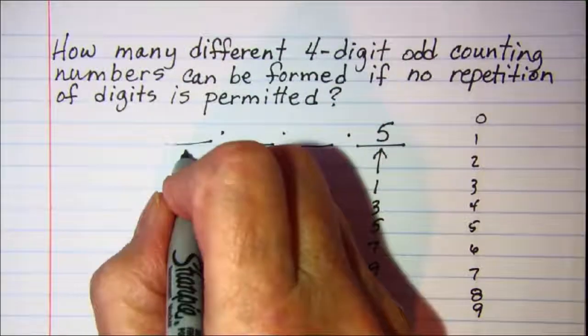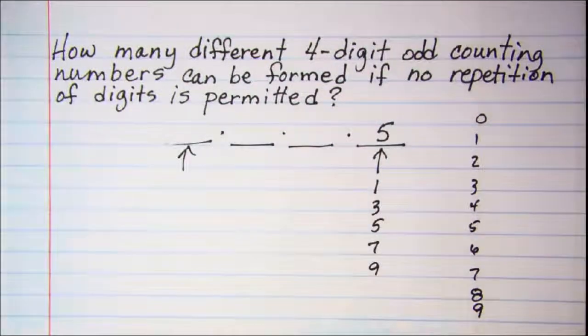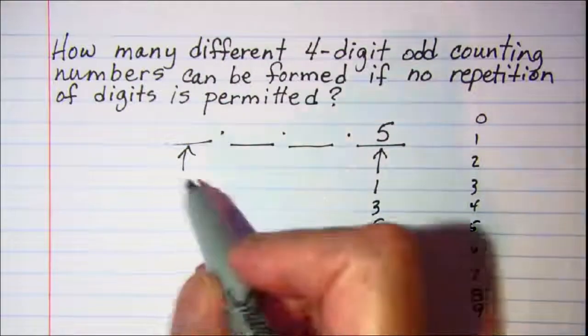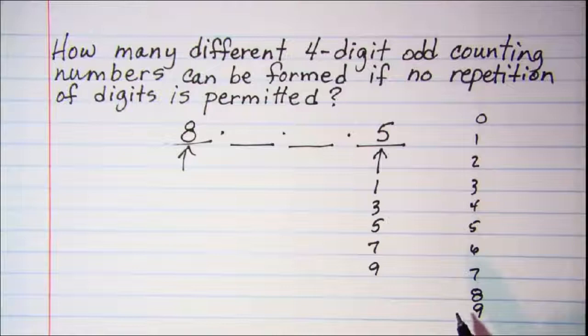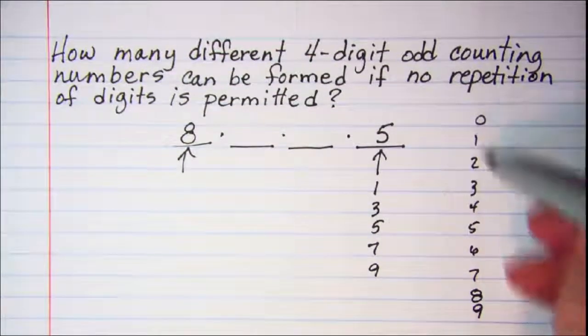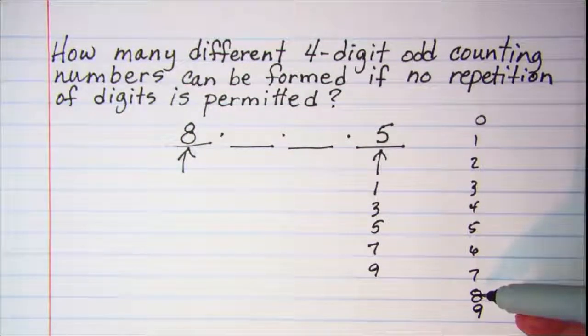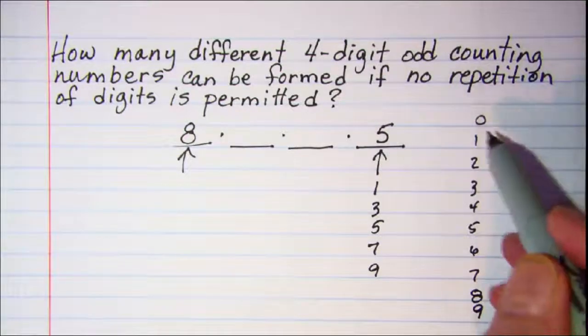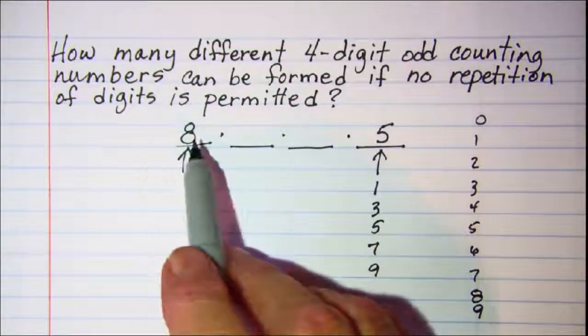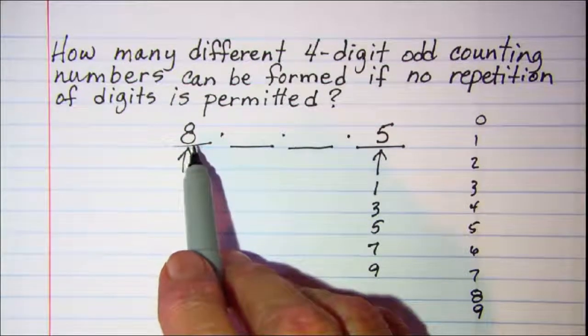For this lead spot I cannot use a zero. So I only have eight digits that I can choose from now. Because I started with 10, I used one of those for the units position, and I can't use zero in the lead position. So there's only eight here.